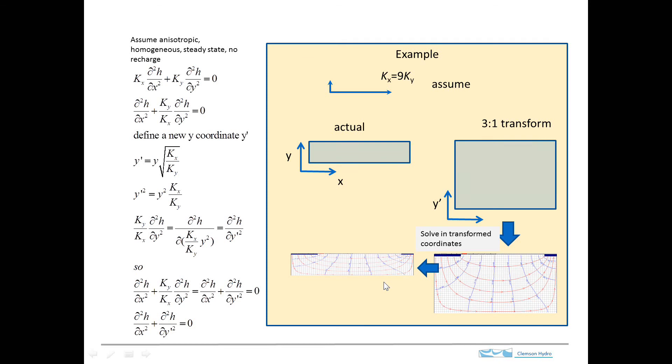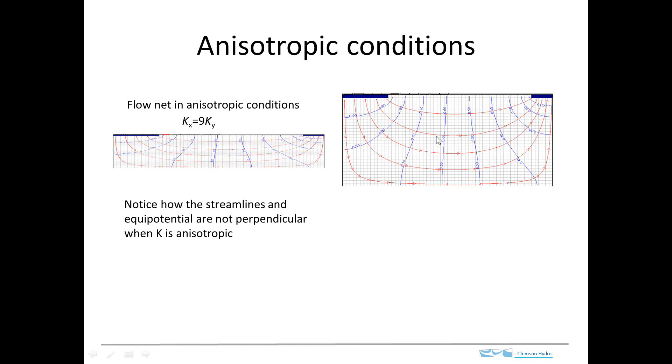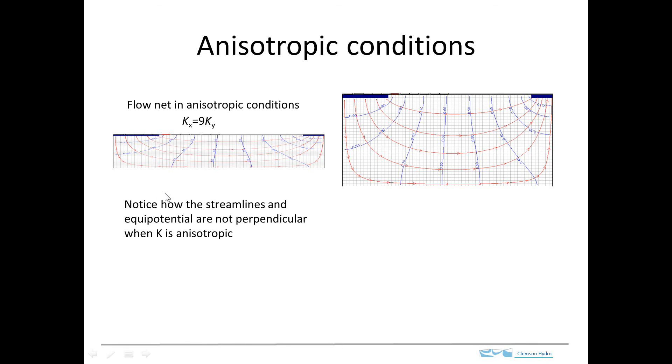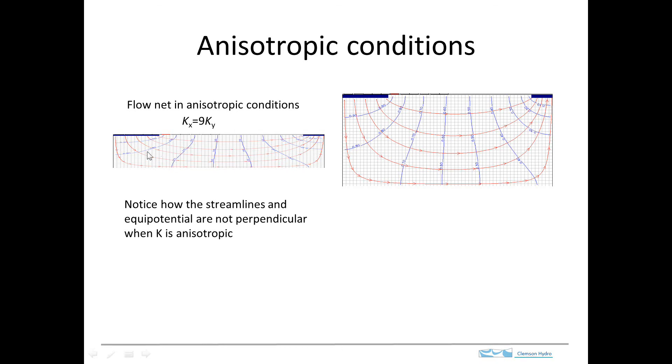And if we take a look at this, here's the case that we actually solved graphically, and then here's the compressed version. And so this is our flow net. And what we see is that the equipotentials, shown here in blue, and the flow lines, the red, are now no longer perpendicular to one another.